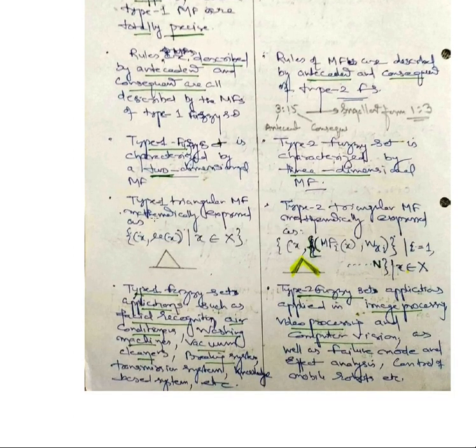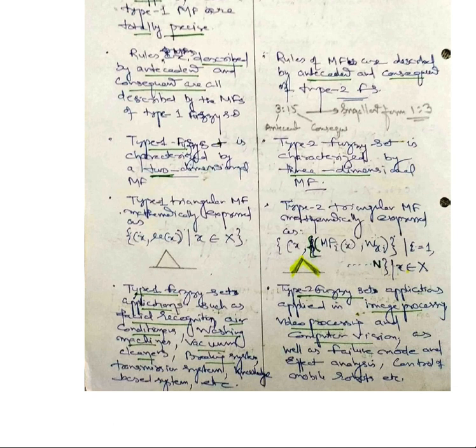Now coming to the Type 1 fuzzy set — if you take a triangular membership function, a simple Type 1 fuzzy set, we define it as having two things: X and mu(X), where X belongs to capital X, or [0,1]. But in Type 2, X is separately set; inside that, MFI(X) and its weight WX_I, such that I belongs to 1 to N. So up to N membership functions are selected, and that is a subset of universe of discourse X. The membership function is written in the form: membership function comma its weight.